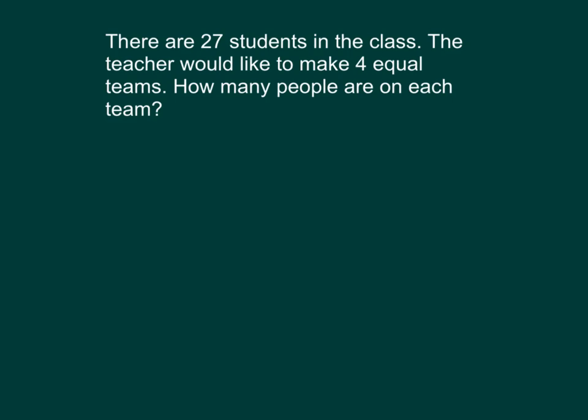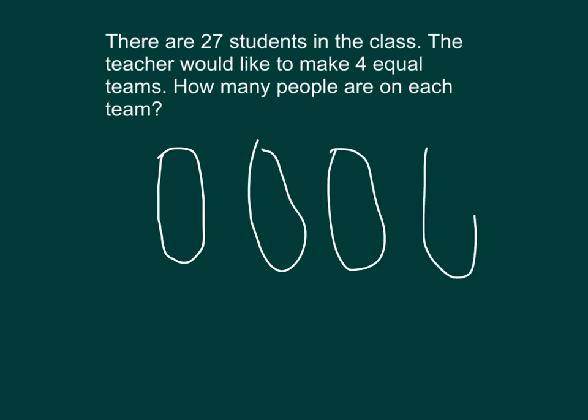There are 27 students in the class. The teacher would like to make 4 equal teams. How many people are on each team? So we are now looking at this problem here. And so it looks like we have a division problem, where there's 4 equal teams. Let's go ahead and set this up as an array. Okay, so that's one team there. There's another team. There's another team. There's another team there.